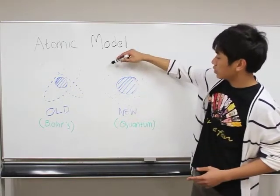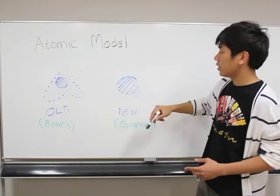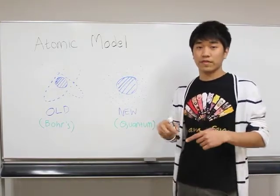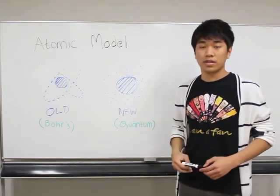And the area that is close to the nucleus, actually there is the region that we most likely, like 95%, we are going to find the electron. And then we call it orbitals.